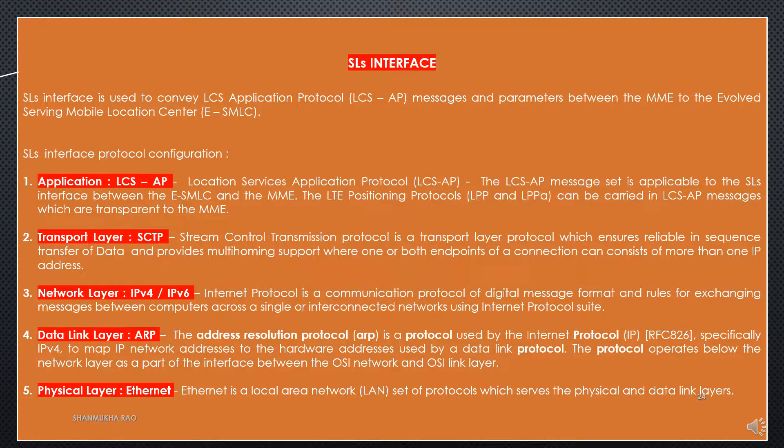The SLS interface is used to convey LCS Application Protocol messages and parameters between the MME and the Evolved Serving Mobile Location Center (E-SMLC). SLS Interface Protocol Configuration: first is the application layer where LCS Application Protocol (LCSAP) is used — the LCSAP message set is applicable to the SLS interface between the E-SMLC and the MME. The LTE positioning protocols LPP and LPPA can be carried in LCS-AP messages which are transparent to the MME.